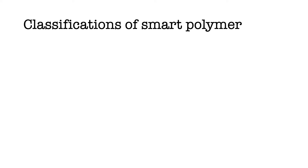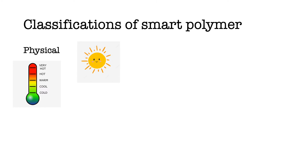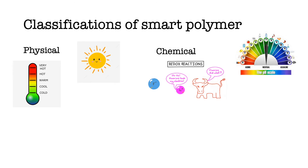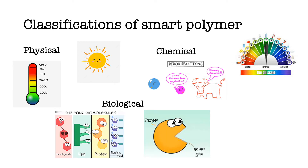There are different ways we can classify these smart polymers, but the method I will focus on here is classifying them depending on what stimuli they respond to. Our first category is physical stimuli, such as temperature and light. Secondly, we have polymers which respond to chemical stimuli, like a change in pH or redox reactions. And finally, there are polymers which respond to a biological stimulus, such as enzymes and biomolecules like lipids and proteins.